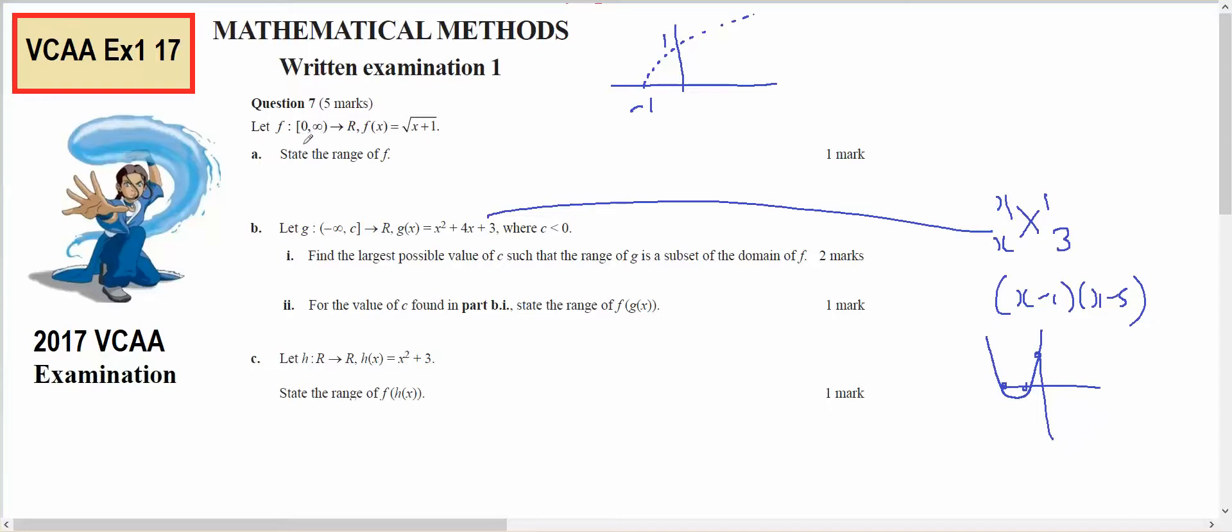But I've got a restricted domain for f from 0 to infinity, therefore we go from 1 to infinity for our graph. So the domain of f is 0 to infinity, but the range of f is 1 to infinity, so 1 to infinity is the answer.